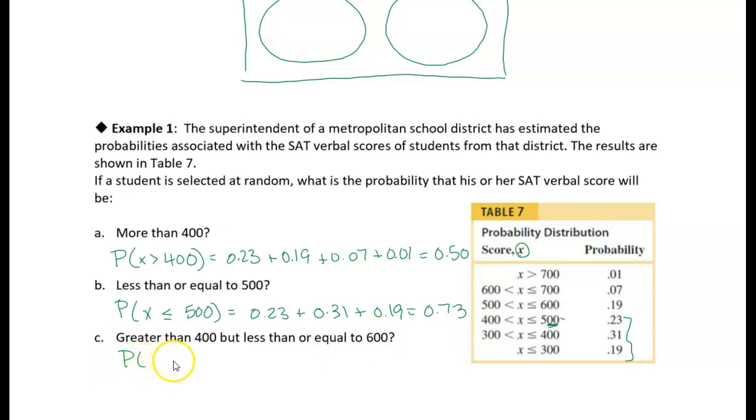And then finally, we're asked to find the probability that the score is between 400 and 600. So greater than 400, but less than or equal to 600. So 400 less than x less than or equal to 600. So let's find that on here. So 400 to 600, let me again I'll get rid of some of these markings. 400 is 600. So we're looking at, so here's 600 and here's 400. So we're looking at just basically these two. So we're just going to add them up. So 0.23 plus 0.19 gives us 0.42. So there's a 42% chance that a student scored between 400 and 600.